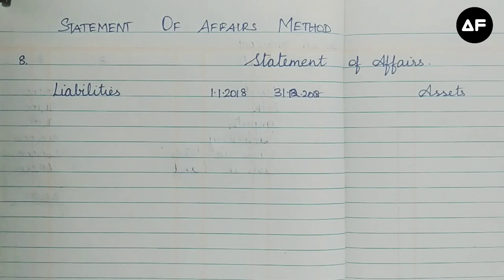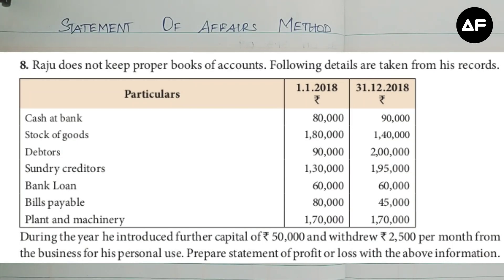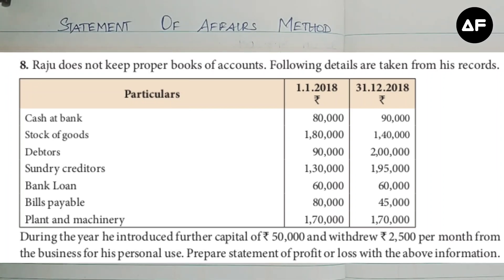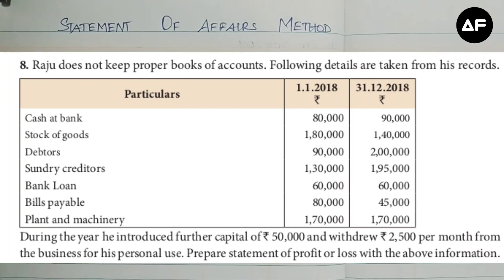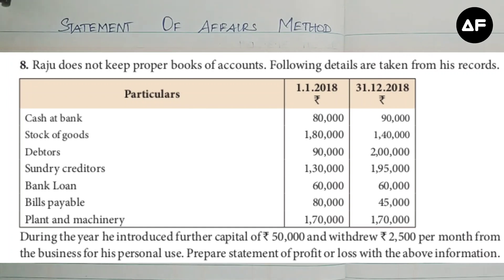Let's look into the sum. Raju does not keep proper books of accounts, and the following details are taken from the records. There are two columns with dates: the opening balances on 1-1-2018 and the closing balances on 31-12-2018. They've given a set of assets and liabilities, which shows that the opening and closing capital is missing. During the year, he introduced additional capital of 50,000 and withdrew 2,500 per month for personal use — so that must be multiplied by 12 for the year. The task is to prepare a statement of profit or loss.